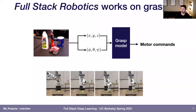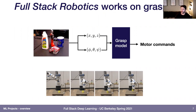We're working on a company called Full Stack Robotics, focused on robotic grasping. Our system uses two different models. The first is the perception model, which takes images as input and produces the state of the world — the positions and orientations of objects. The second is the grasping model, which takes those raw positions and orientations as input and produces motor commands for the robot to execute in the world.